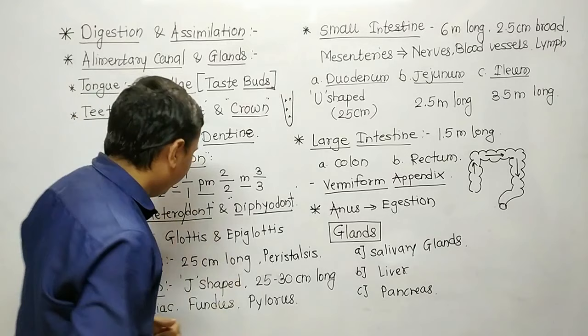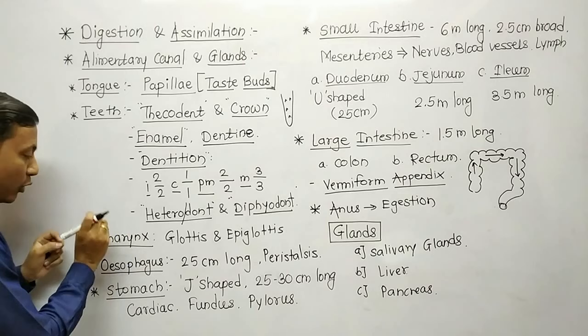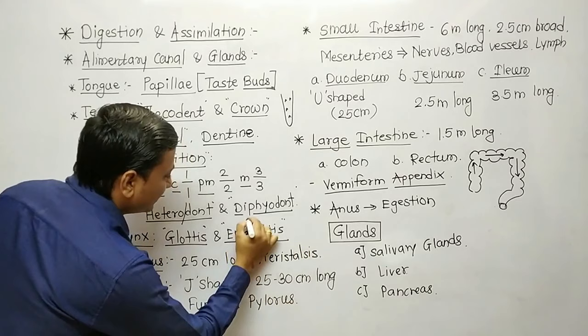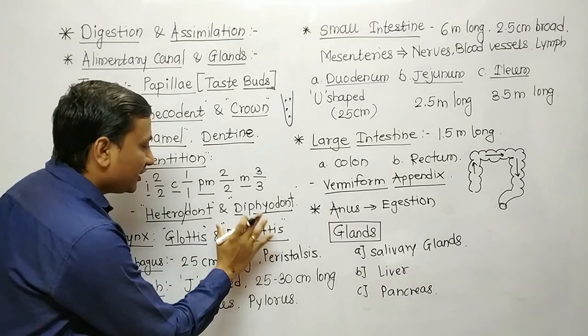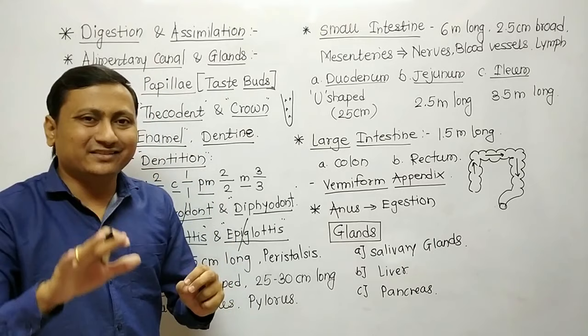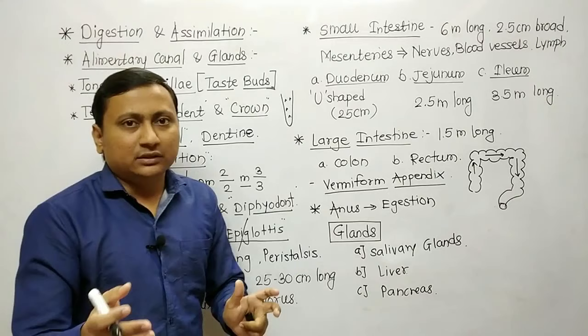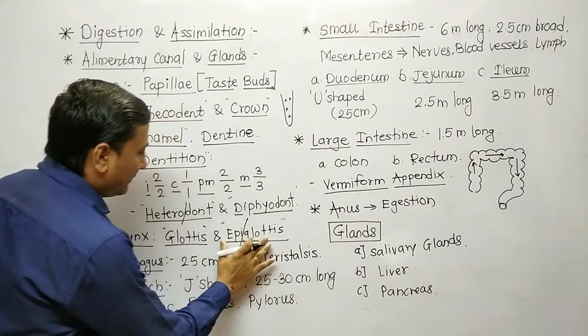The next alimentary organ is pharynx. The opening of the respiratory system in the pharynx is known as glottis. This glottis is covered by a cartilaginous flap called epiglottis. Epi means above the glottis. Epiglottis is important because it prevents the entry of food into the respiratory system during ingestion, directing food into the alimentary canal instead.